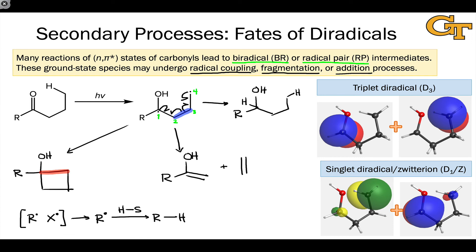In closing, be on the lookout for these three types of processes from biradical or radical pair intermediates. For diradicals specifically, radical-radical coupling and fragmentation are most important. Both depend on spin state: radical coupling can only occur if electrons have anti-parallel spins, and the same is true of fragmentation — electrons must have opposite spins to produce two singlet molecules. Triplet biradicals have much longer lifetimes than the corresponding singlets, allowing for rotation around bonds, conformational equilibration, and outcomes that profoundly differ from singlet biradical reactivity.